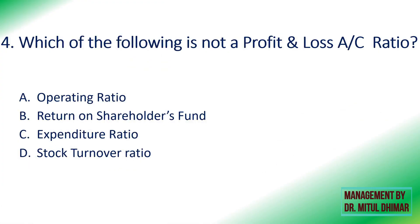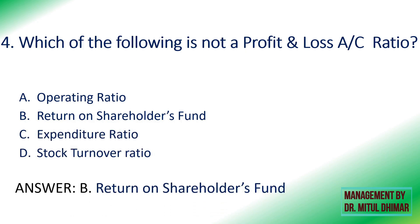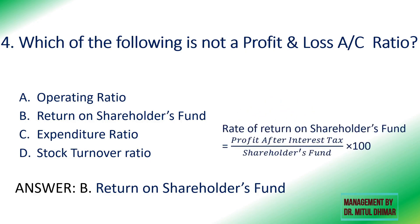Fourth: which is NOT a P&L account ratio — operating ratio, return on shareholders' fund, expenditure ratio, or stock turnover ratio? The answer is return on shareholders' fund. P&L ratios use particulars of the P&L account only. For return on shareholders' fund, profit after interest and tax comes from P&L, but shareholders' fund — equity share, preference share, reserves surplus less fictitious assets — is from the balance sheet. All other options use only P&L particulars.